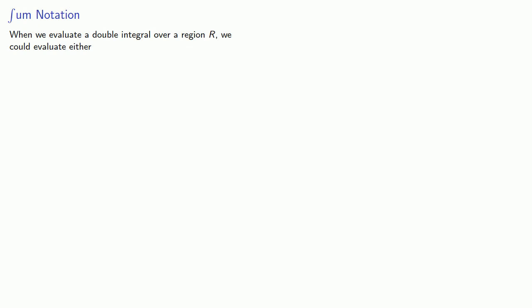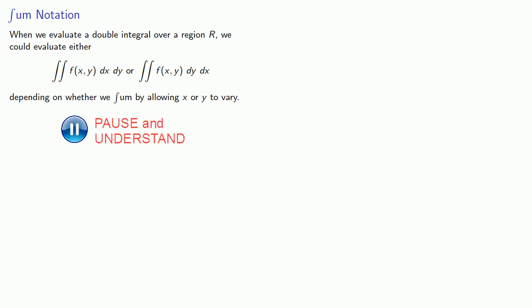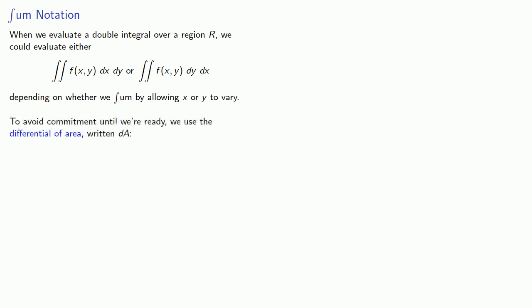When we evaluate a double integral over a region R, we could evaluate either the double integral first with respect to x and then y, or first with respect to y and then x, depending on whether we sum by allowing x or y to vary. To avoid commitment until we're ready, we use the differential of area, written dA, and write our double integral this way.